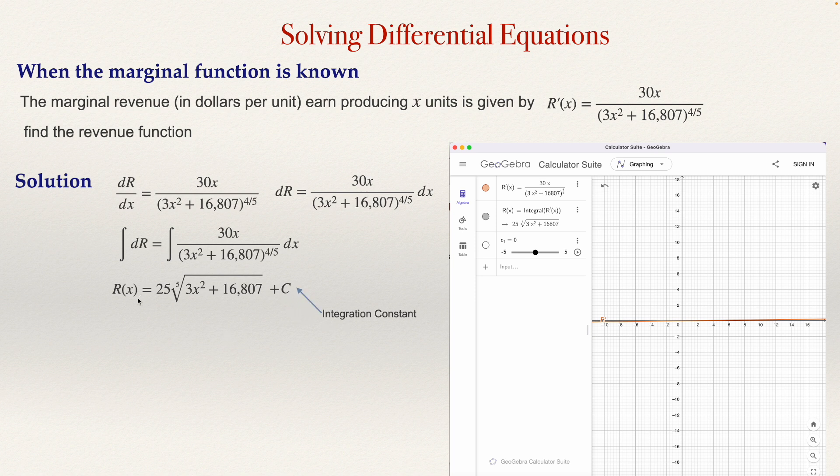Okay, now that we have what is R(x), I need to know what is this c. But we know something: we know that if you are not producing anything, your revenue will be zero. So if the number of units produced is zero, the revenue will be zero. We can use this fact that if we produce zero units then the revenue will be zero. So we can substitute x equals zero, and then the revenue will be zero.